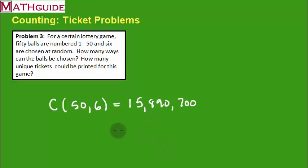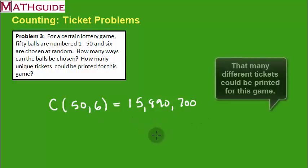That's close to 16 million tickets. So if you wanted to make sure you were going to win this lottery, you'd have to buy almost 16 million tickets to cover all your bases.